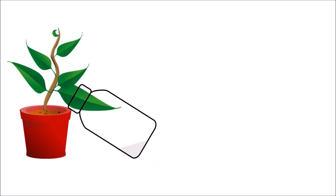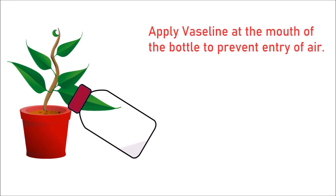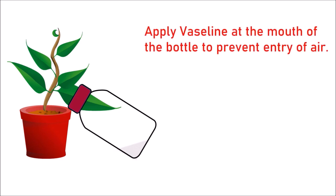Insert one of the leaves of the plant into the bottle through the mouth. Fix a split cork to the mouth of the bottle so that the leaf passes through the split without being damaged. Apply Vaseline at the mouth of the bottle to prevent the entry of air.